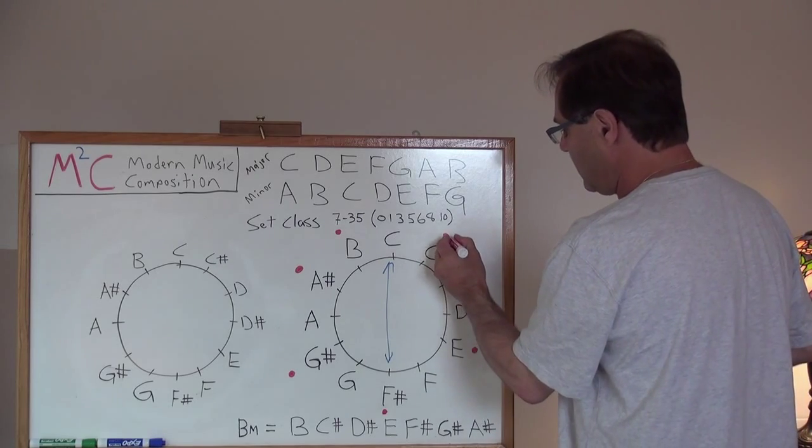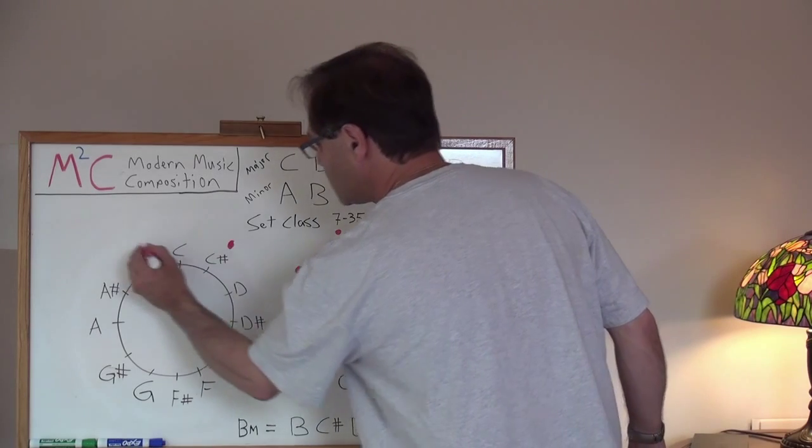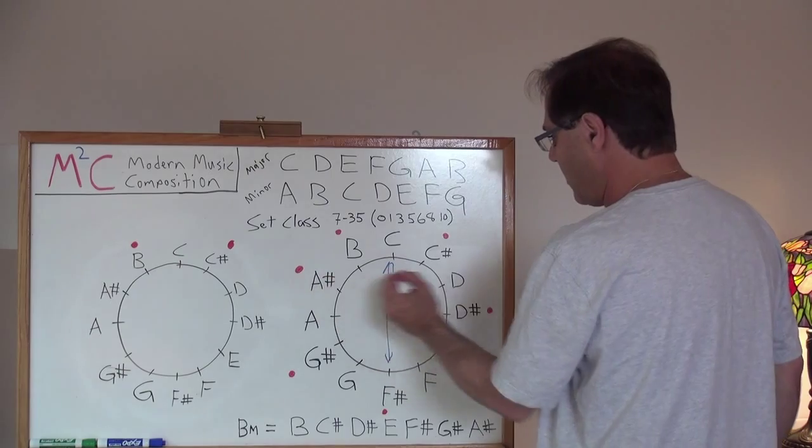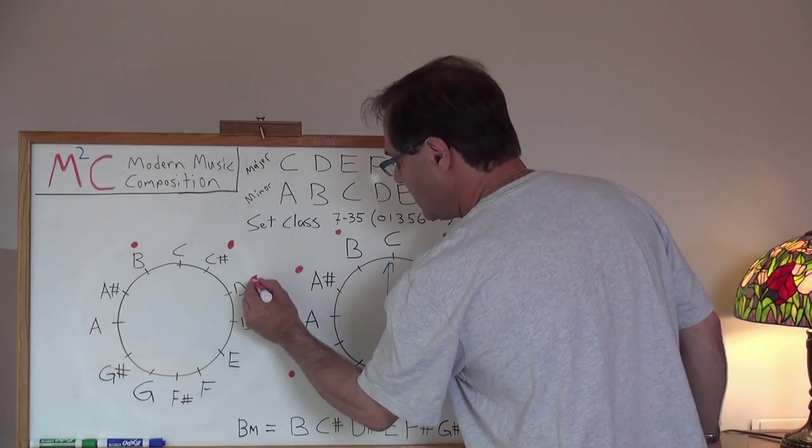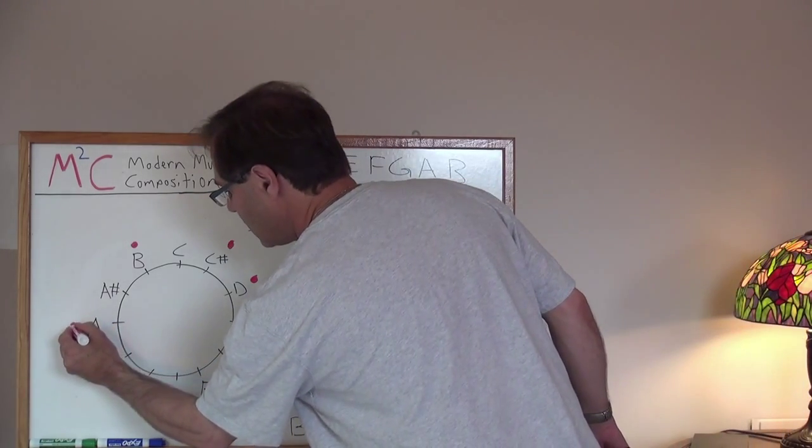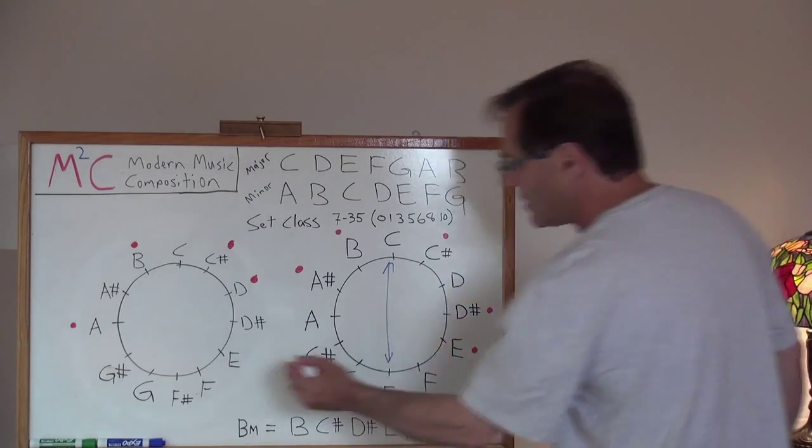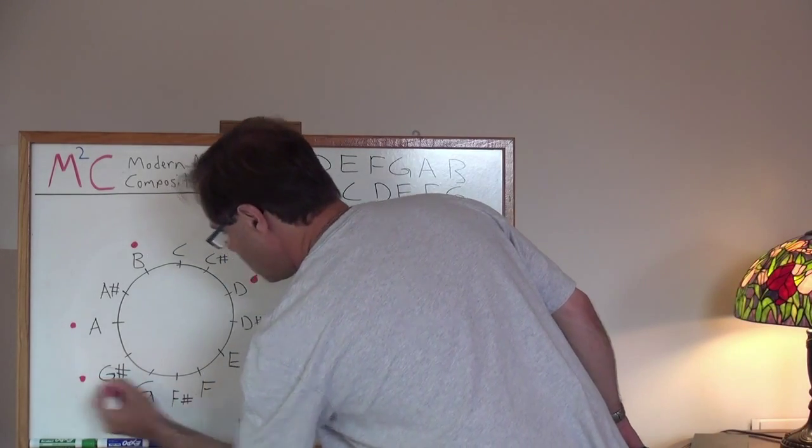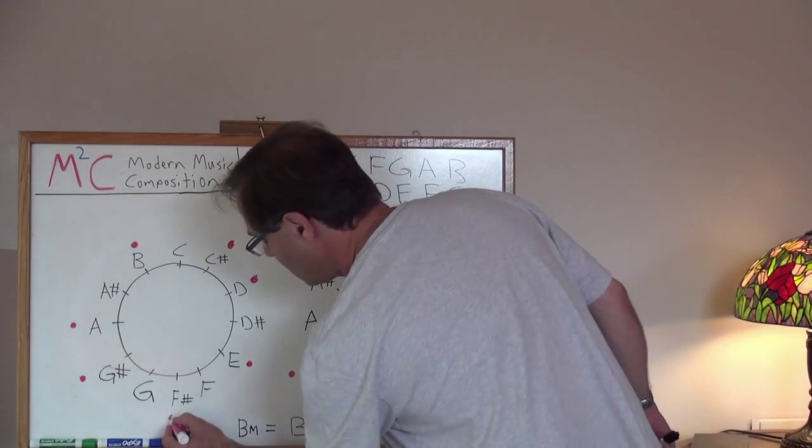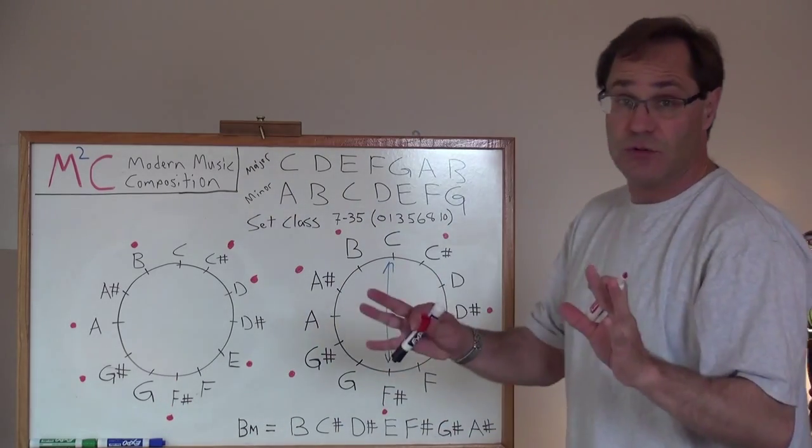That means that C sharp, this guy goes over to B, but B goes over to C sharp. So, in a sense, that's somewhat preserved. A sharp, however, goes to D. D sharp rotates over to A. G sharp goes to E, but then E goes to G sharp. And F sharp stays the same because we've rotated on this axis. So, F sharp and C don't change.